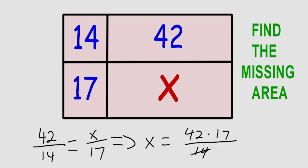14 goes into 42 three times, so this is 3 times 17 and is equal to 51.